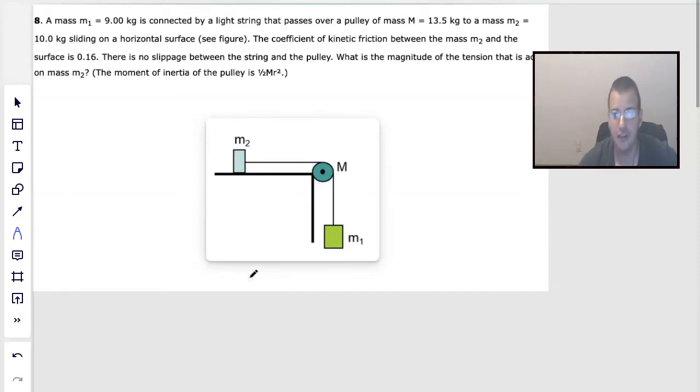A mass of 9 kg is connected by a light string—I'm going to assume that light means massless—that passes over a pulley of mass M, which is 13.5. That's an empty pulley.